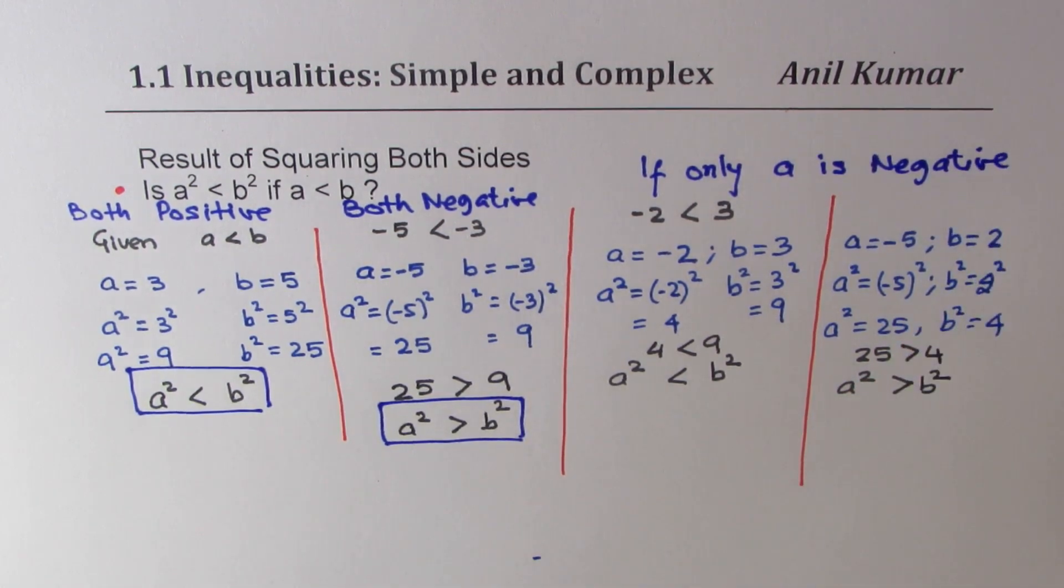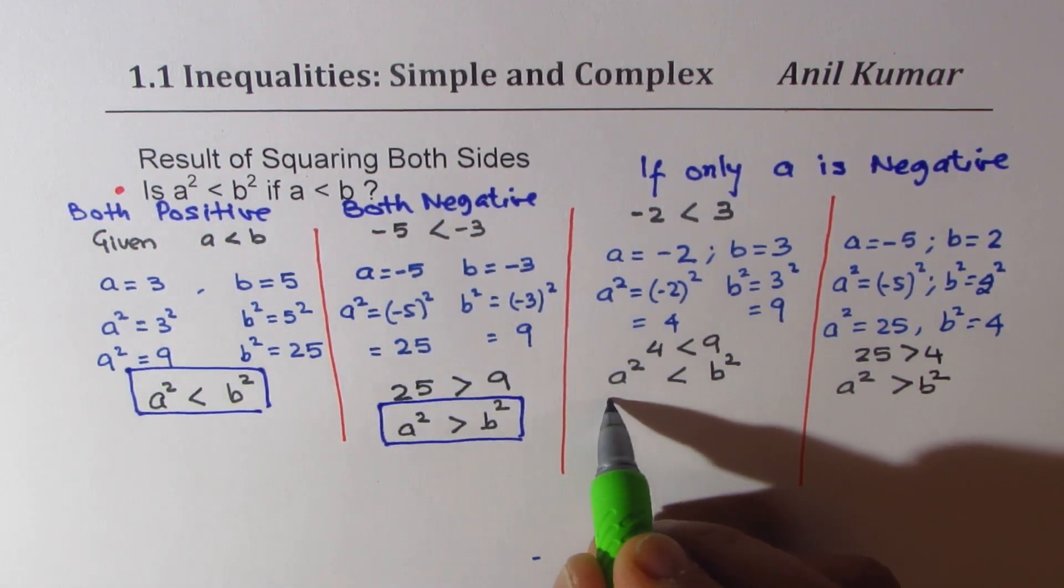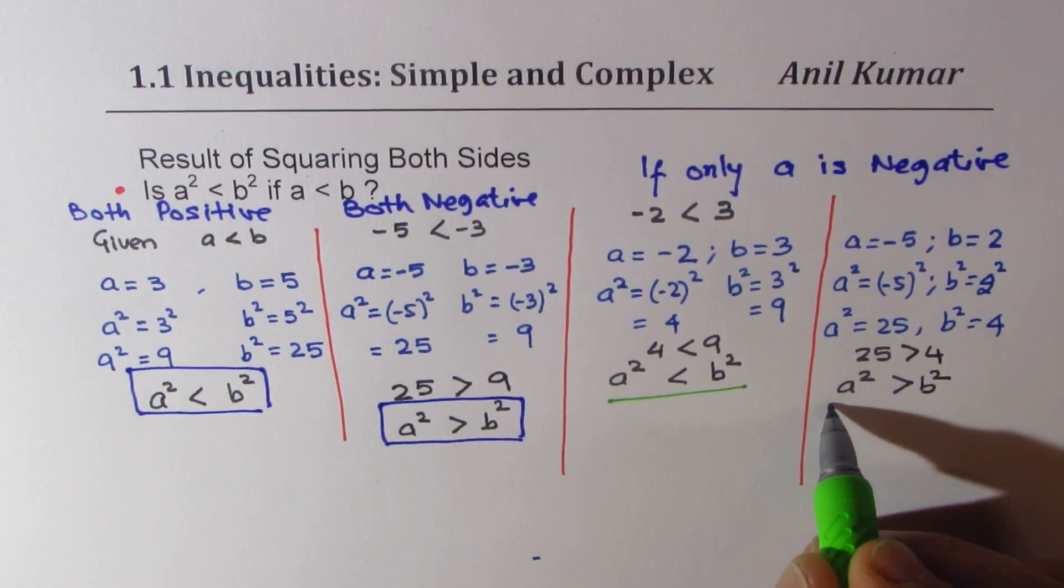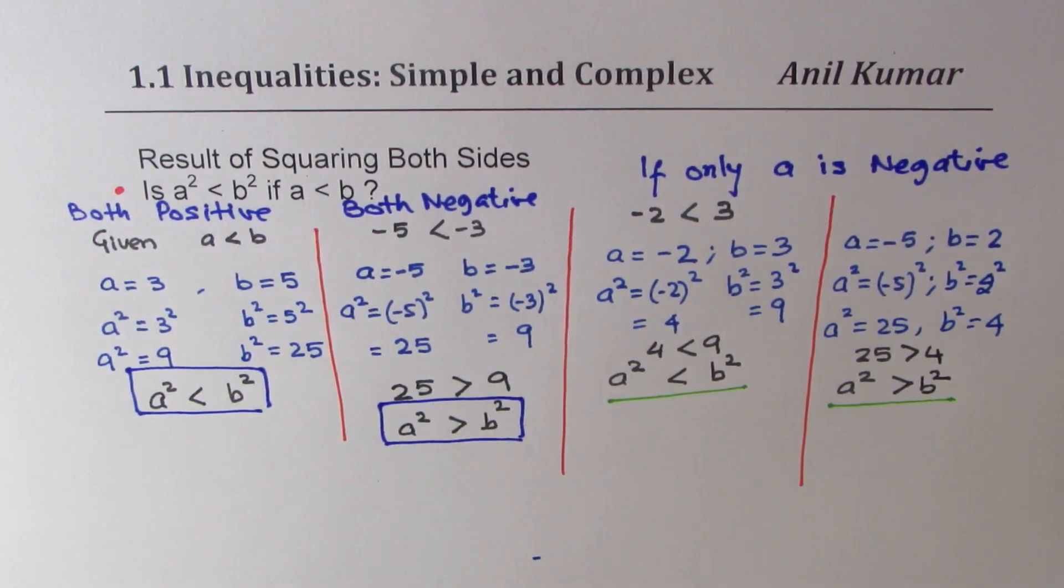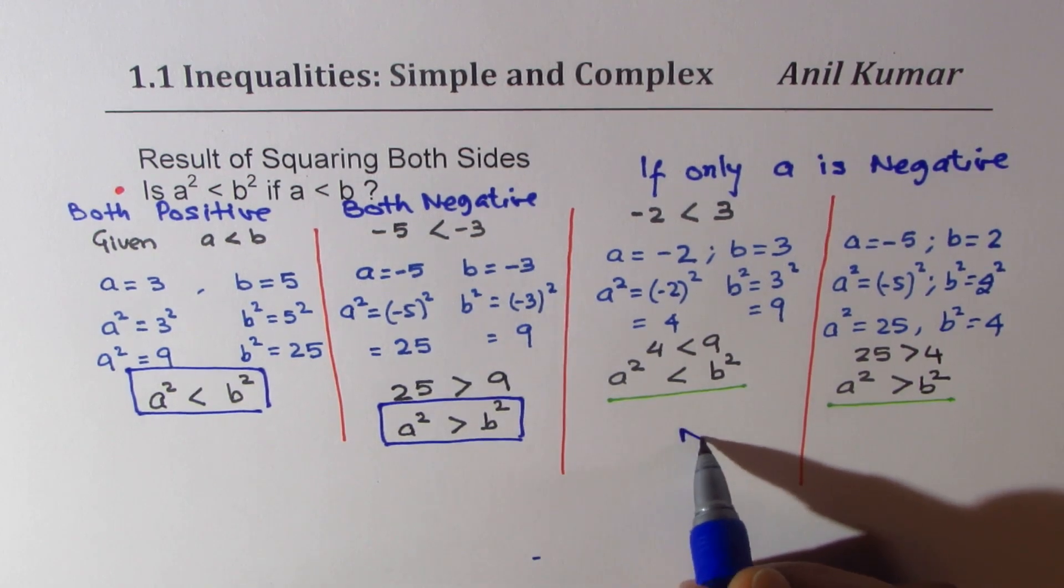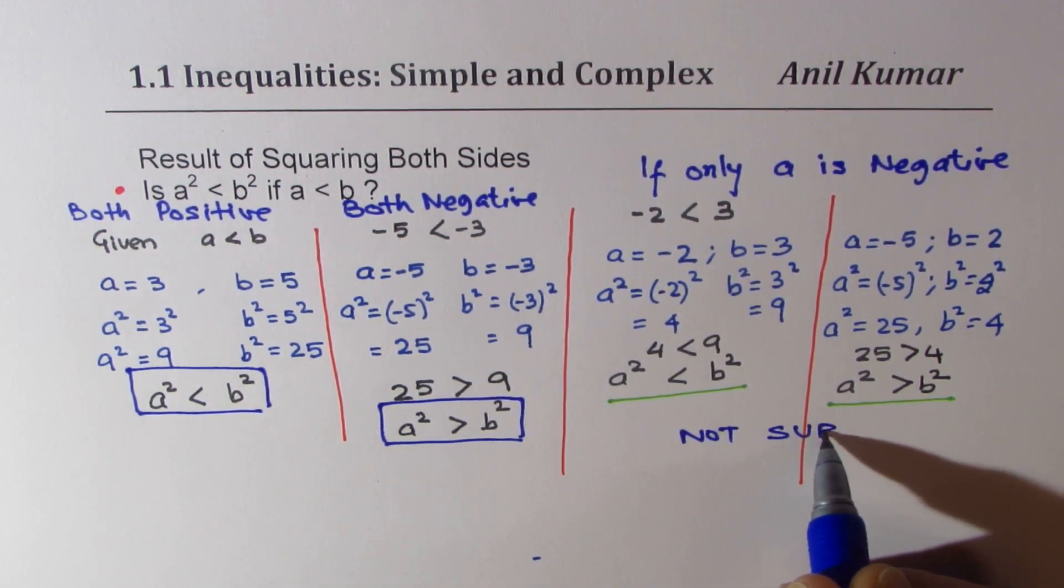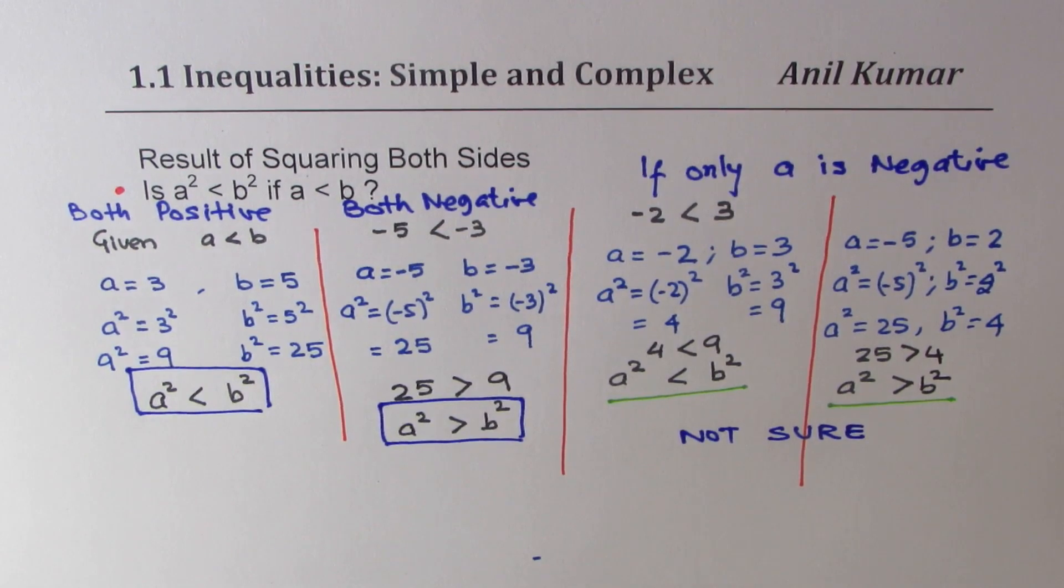So, in that case, we are not sure. What we get here, in this particular case, is two different conditions. a² could be < b², or a² could be > b². So, we are not sure. Do you see that?